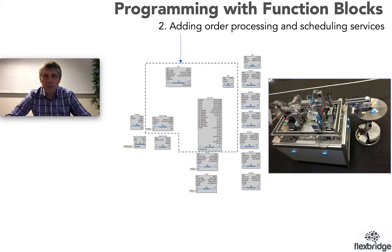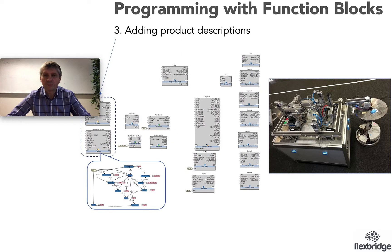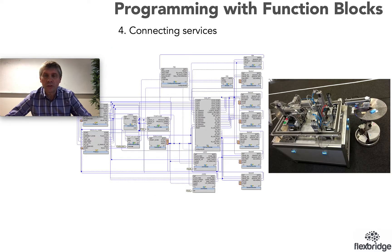Then we add some control logic, also in the form of function blocks, that implements more complicated services for processing orders or for scheduling components in a given sequence. After that we add function blocks that contain product description. These blocks are programmed using a language of state machines, and with that graphically we can represent the required sequence of operations for a given product. Finally, we connect all the services, we orchestrate them by connecting one to another, and now the entire application is ready to be executed on our distributed control infrastructure.